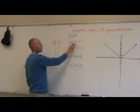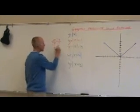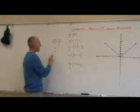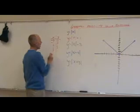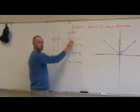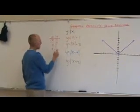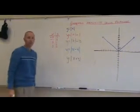0, the absolute value of 0 is 0, we add 1 to that and we get 1. The absolute value of 1 is 1, we add 1 to that and we get 2. And the absolute value of 2 is 2, we add 1 to that and we get 3.